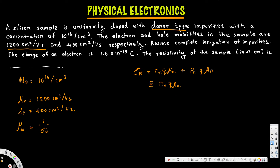We can replace nn with Nd, the number of donors added. So sigma n is approximately equal to Nd times q times mu n. Here, q equals 1.6 times 10 to the power of minus 19 coulomb, Nd equals 10 to the power of 16 per centimeter cube, and mu n equals 1200 centimeter square per volt second.